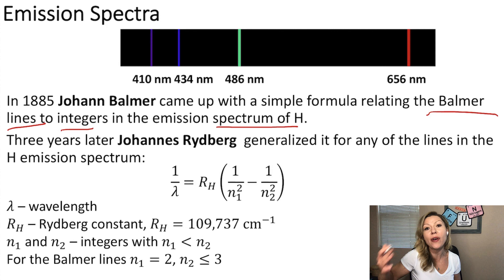in 1885. And then three years later, in 1888, Rydberg generalized it for any of the lines in the hydrogen emission spectrum. Based on his equation, which is shown right here,